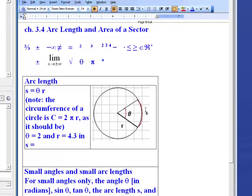The arc length is defined as the angle theta in radians times the radius. So for example, if we have an angle of two radians, which would be in the neighborhood of 100 degrees or so, how do I know that?